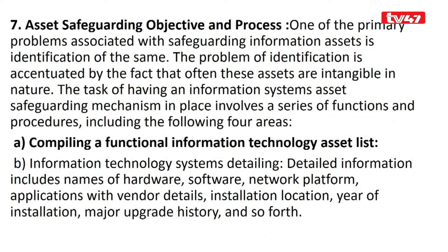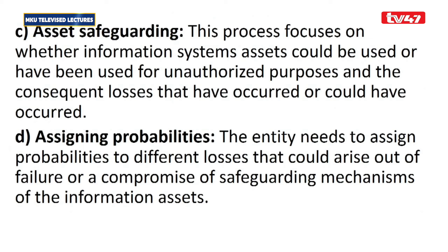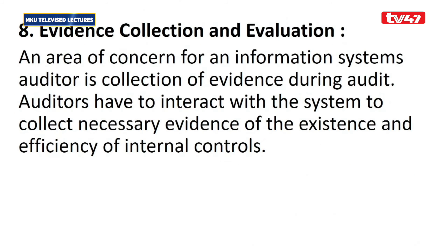Asset safeguarding is another requirement. Safeguarding information assets, which are intangible in nature, involves compiling functional IT asset details — including names of hardware, software, network platforms, applications with vendor details, installation locations, installation dates, and major upgrade history — as an audit requirement. This also involves assigning probabilities and conducting evidence collection and evaluation.